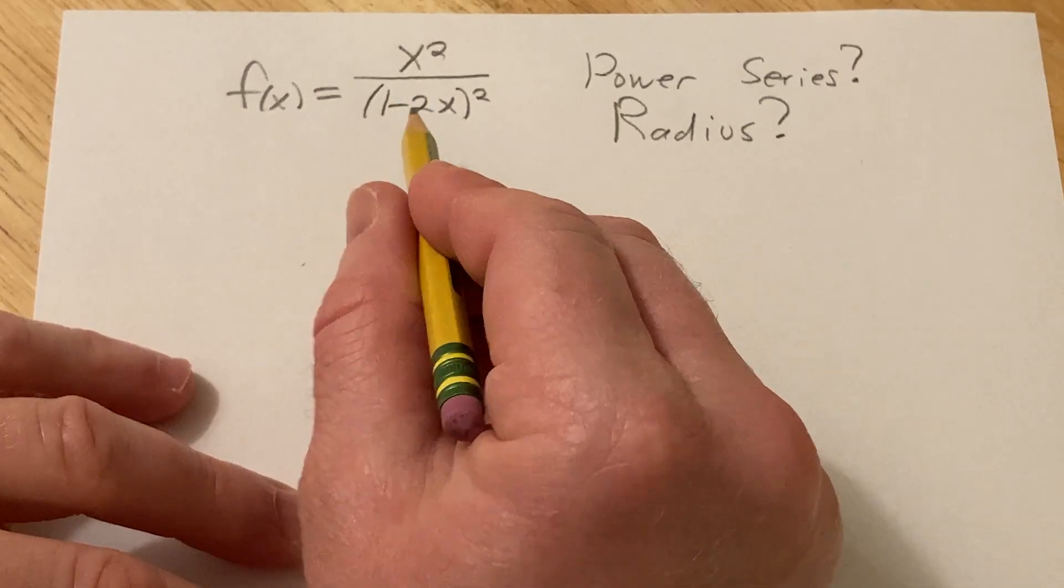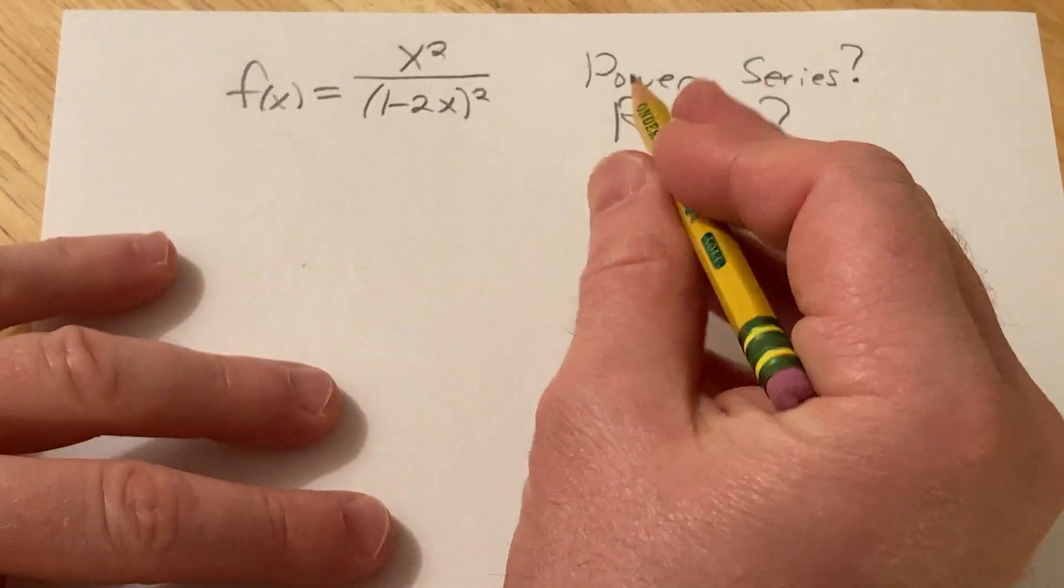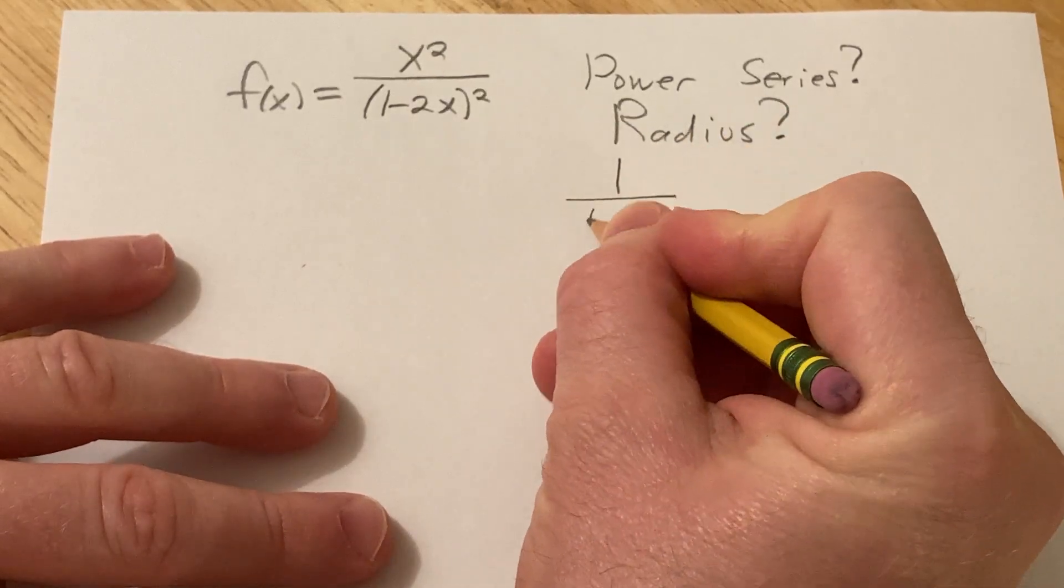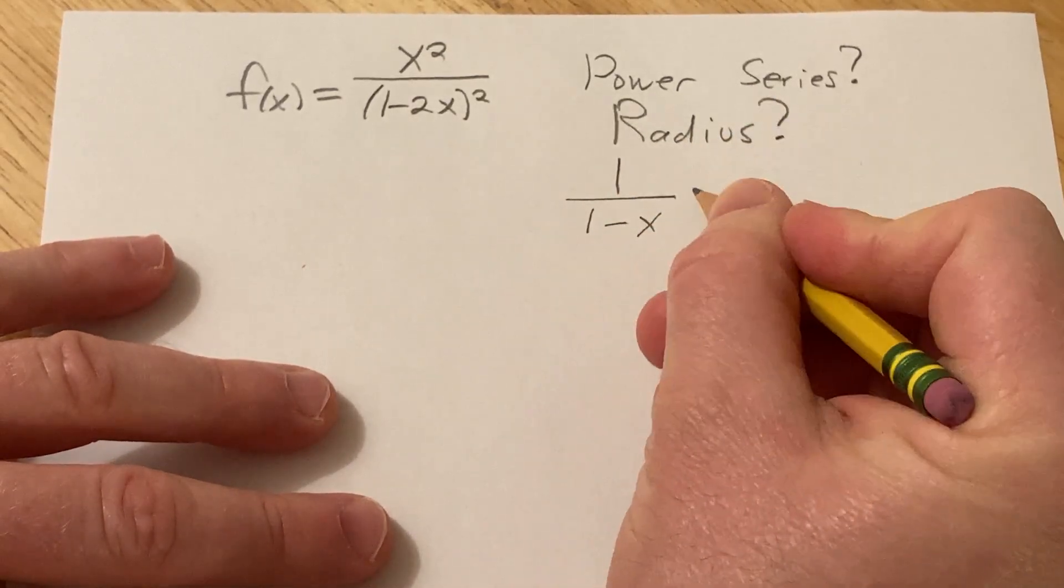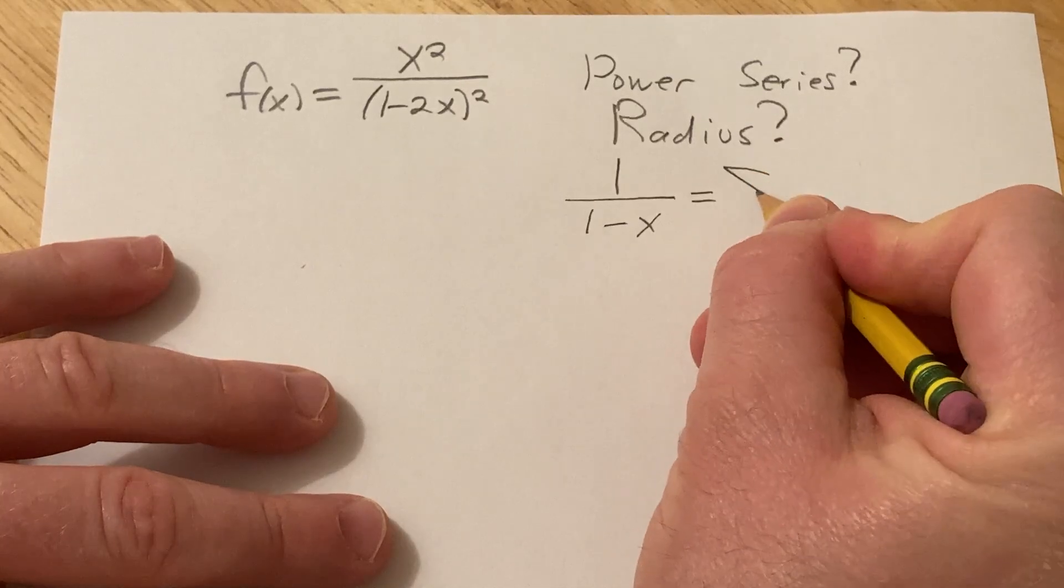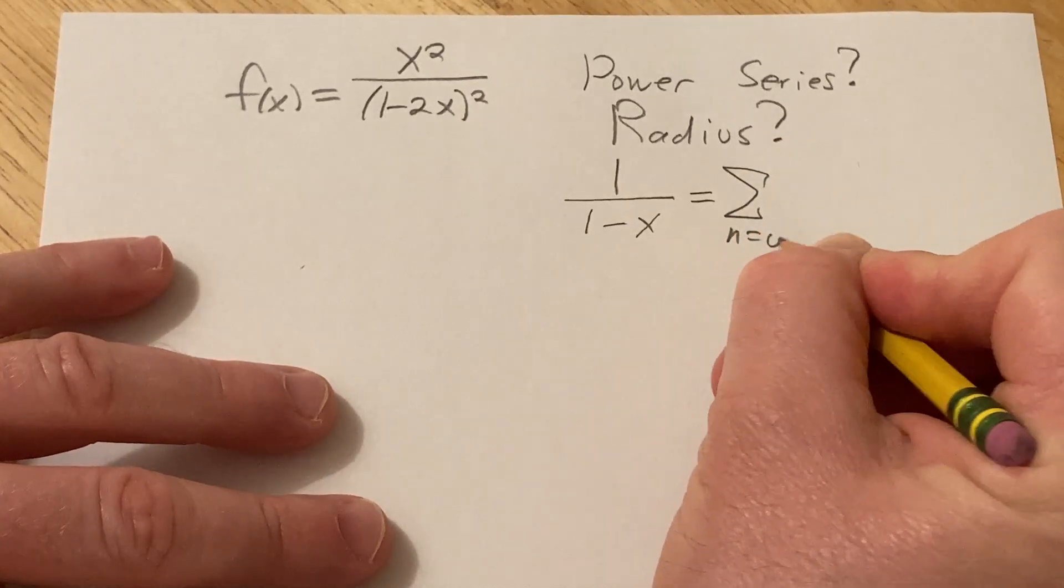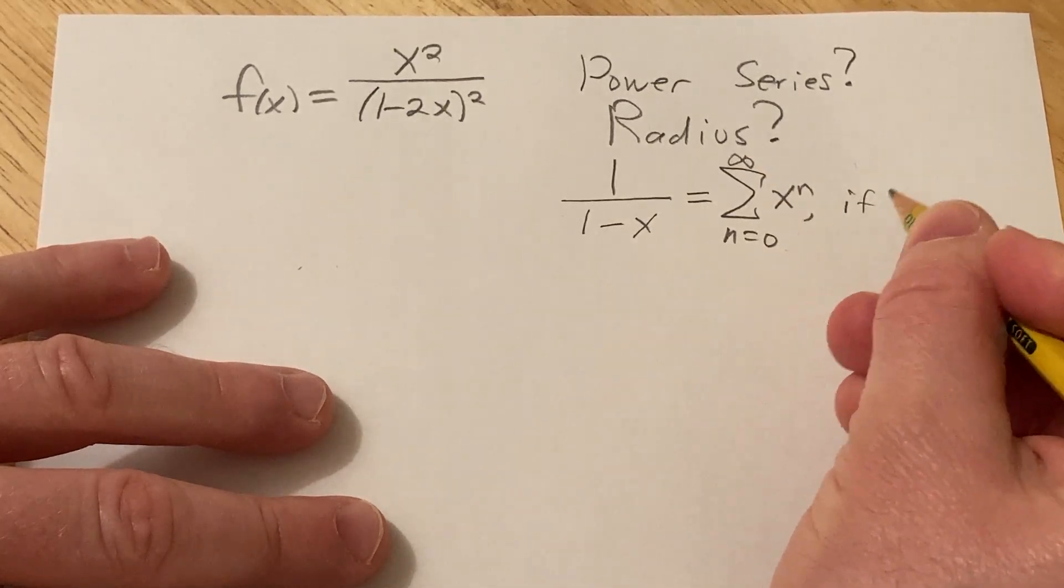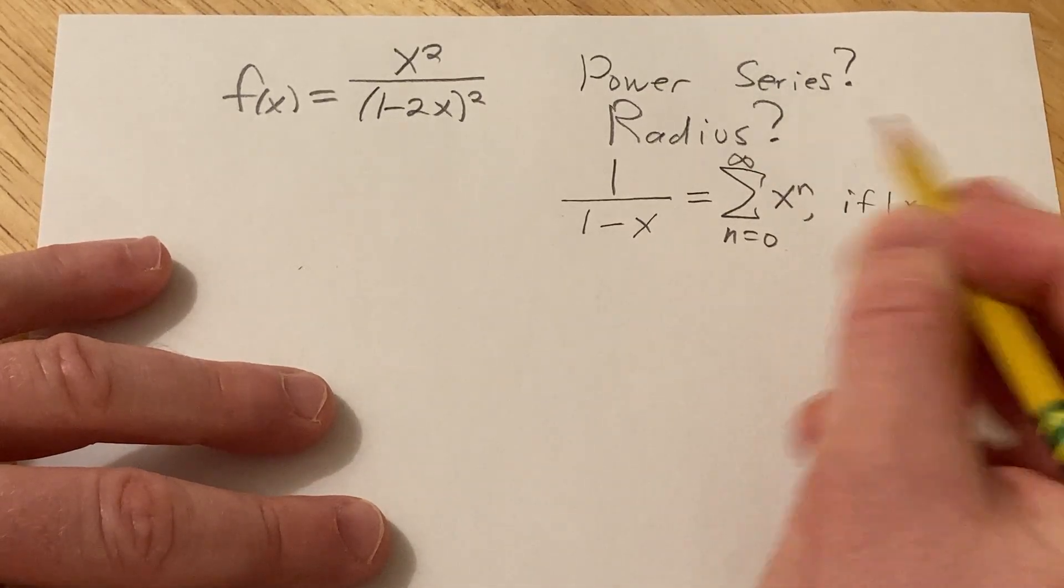So when you see a problem like this, the first thing you want to recall is that you have a familiar formula that you can use. If you have 1 over 1 minus x, this is equal to the infinite sum as n runs from 0 to infinity of x to the n.